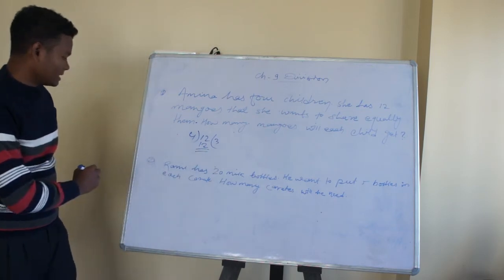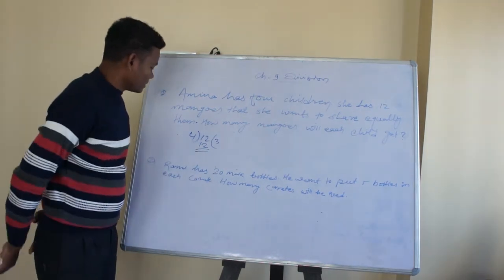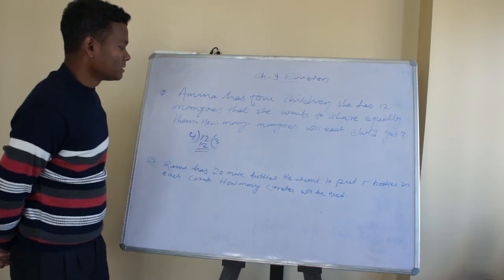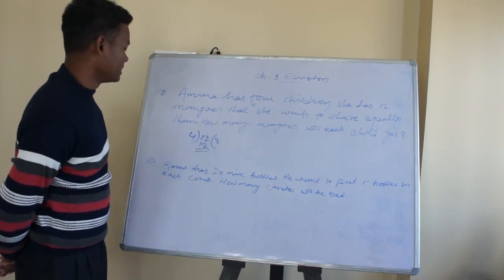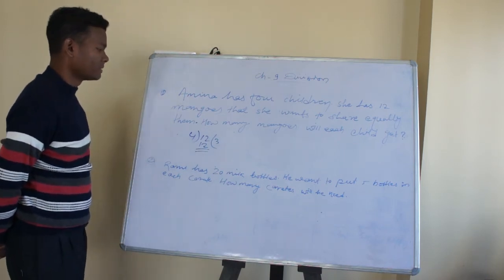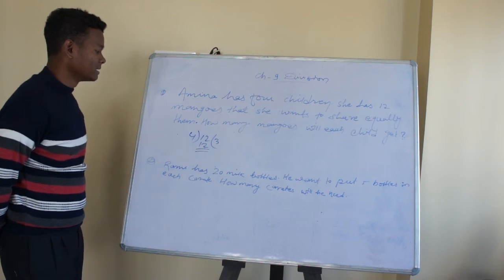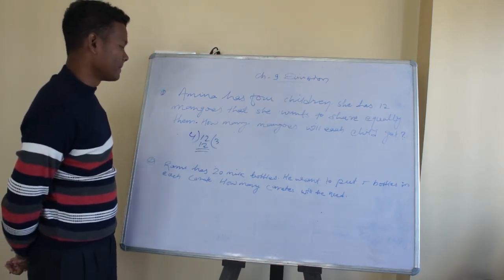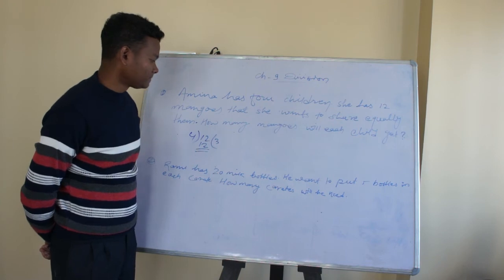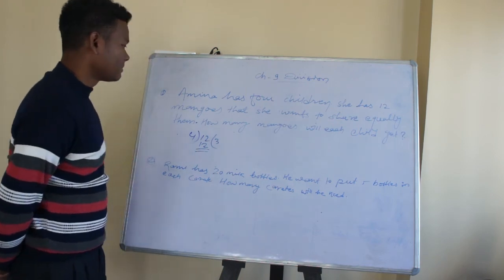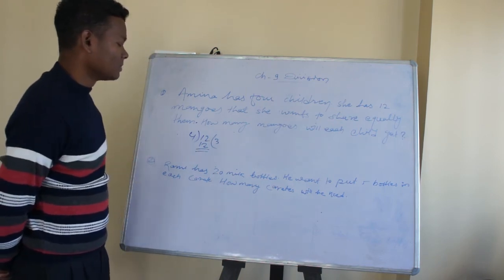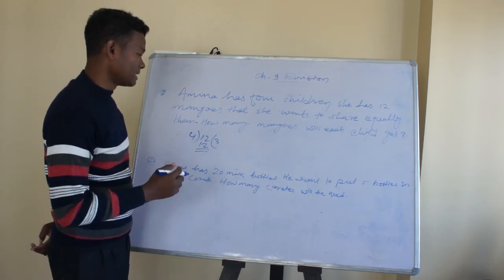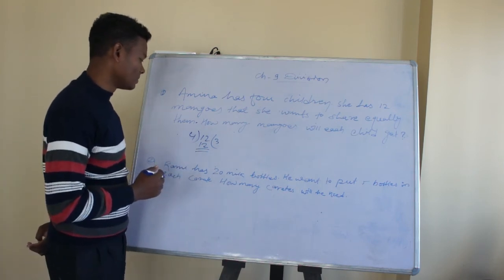Let us see another example. Ramu has 20 milk bottles. He wants to put 5 bottles in each carton. How many cartons will he need? Ramu has 20 milk bottles, he wants to put 5 bottles in each carton. How many cartons will he need? We will divide.